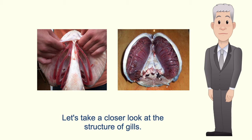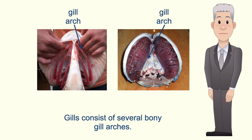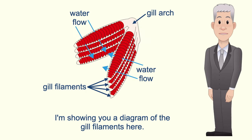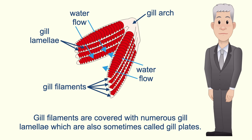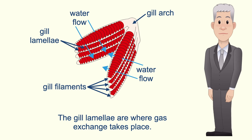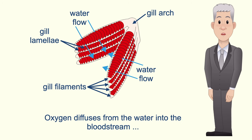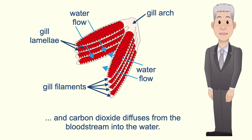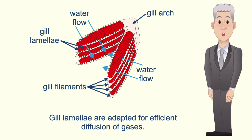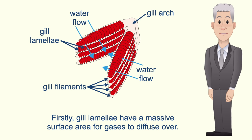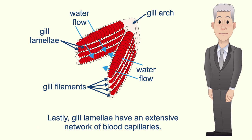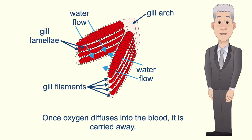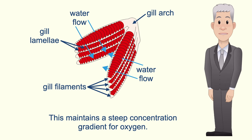Let's take a closer look at the structure of gills. Gills consist of several bony gill arches. Extending from each gill arch are a large number of gill filaments — many pairs extend from each gill arch. Gill filaments are covered with numerous gill lamellae, which are also sometimes called gill plates, and the gill lamellae are where gas exchange takes place. Water flows between the gill lamellae; oxygen diffuses from the water into the bloodstream, and carbon dioxide diffuses from the bloodstream into the water. Gill lamellae are adapted for efficient diffusion: they have a massive surface area, a very short diffusion distance through the walls and into the bloodstream, and an extensive network of blood capillaries. Once oxygen diffuses into the blood it's carried away, maintaining a steep concentration gradient for oxygen.